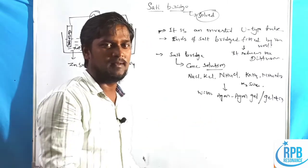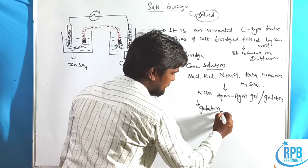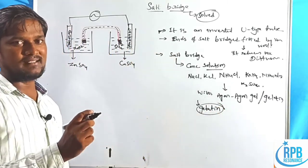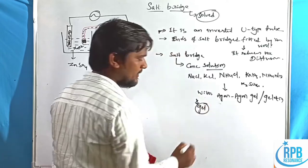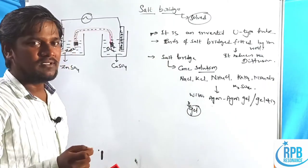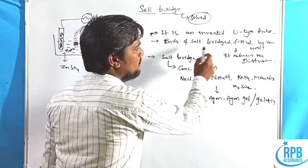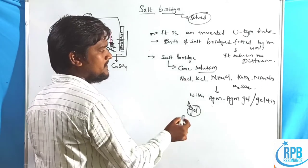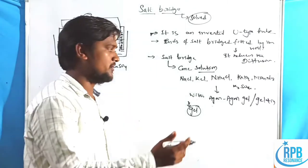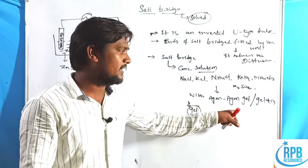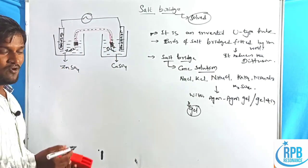After the solution with agar-agar gel or gelatin is cooled, it sets as a gel — not liquid gelatin but a firm gel form. This is the complete construction of the salt bridge: a U-type tube with both ends fitted with wool, filled with a concentrated solution (such as KCl, NaCl, NH₄Cl, KNO₃, or K₂SO₄) mixed with agar-agar gel or gelatin.